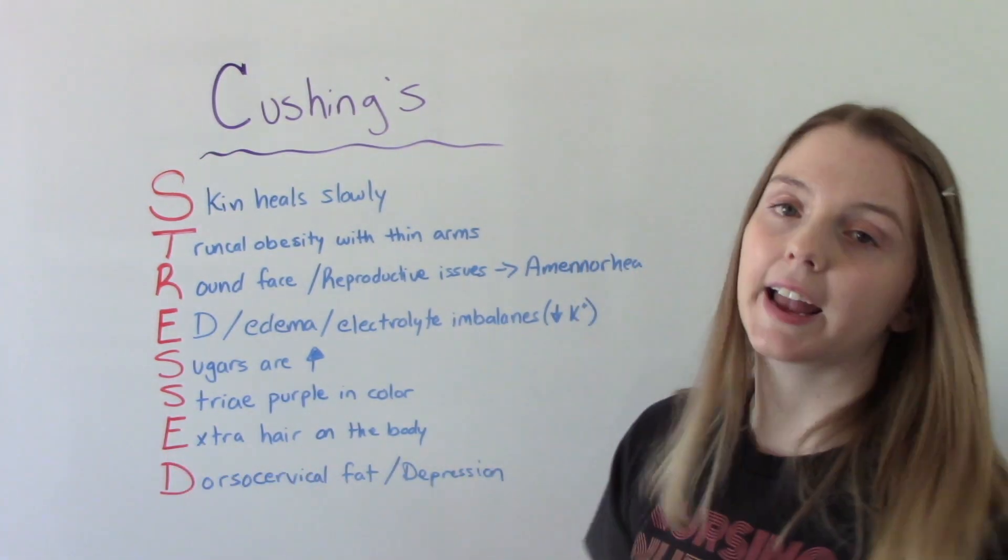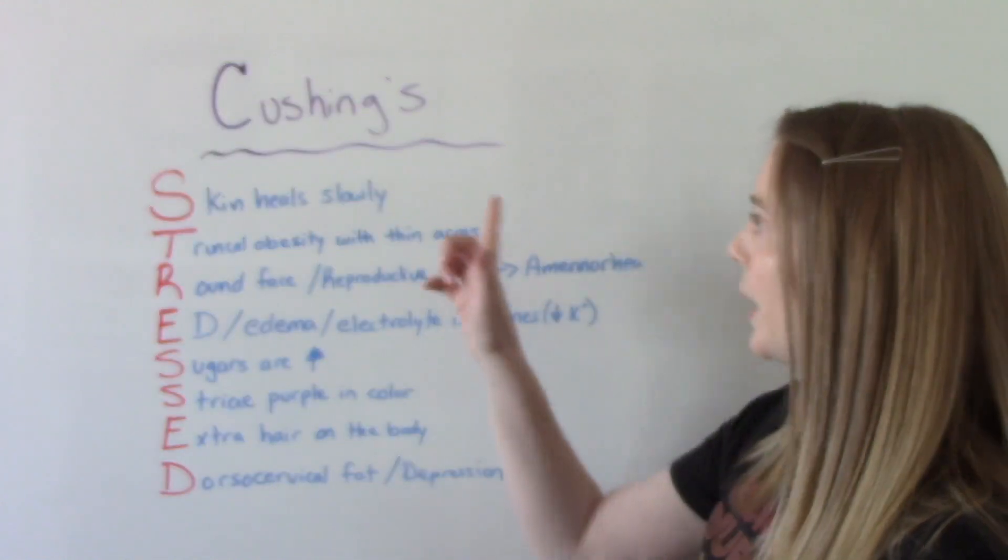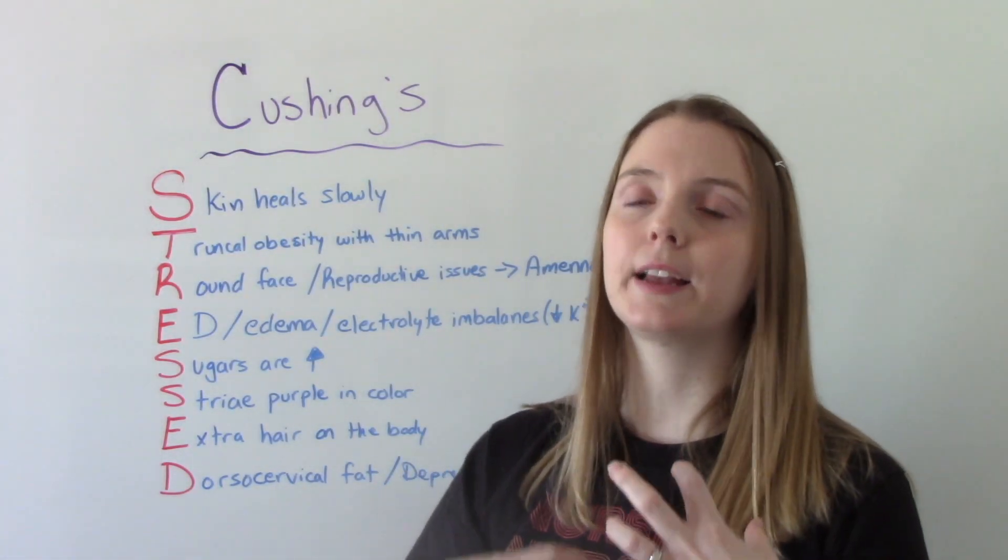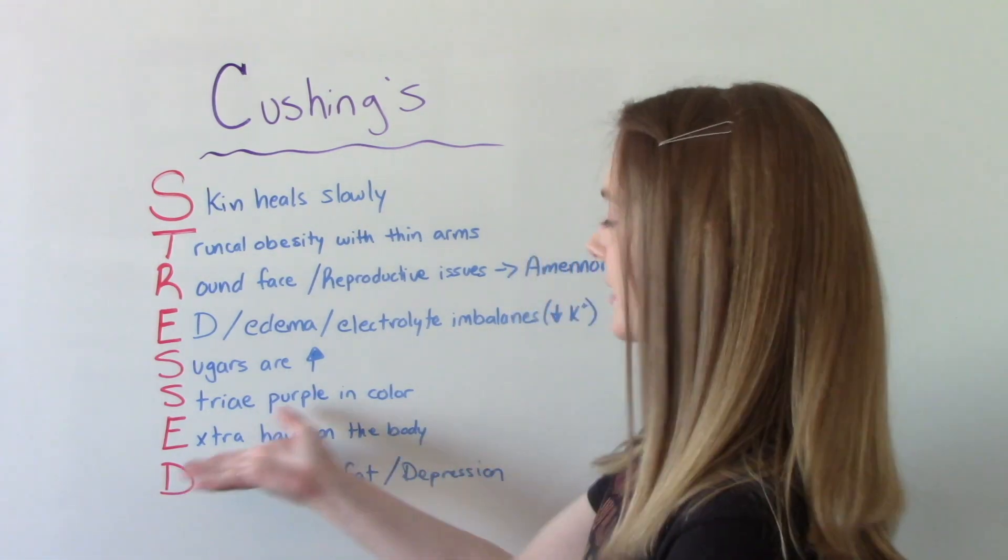E is for extra hair on the body, especially in women. A woman who has Cushing's will start to develop some more traditional male physical characteristics like excessive body hair.